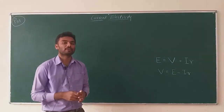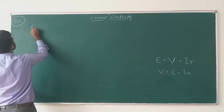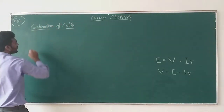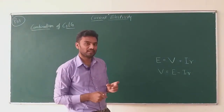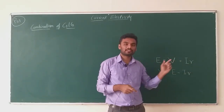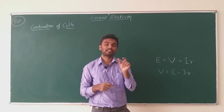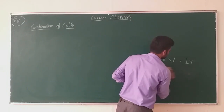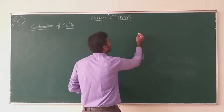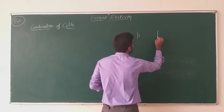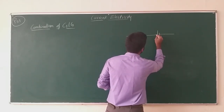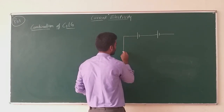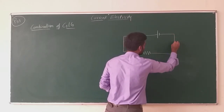Basically, the discussion is about combination of cells. When you have a single cell, it will have its own EMF and its own internal resistance — these are the basic characteristics of that cell. If you connect two cells in series as shown in the diagram, and close the circuit with an external resistance, we need to focus on the effective EMF.